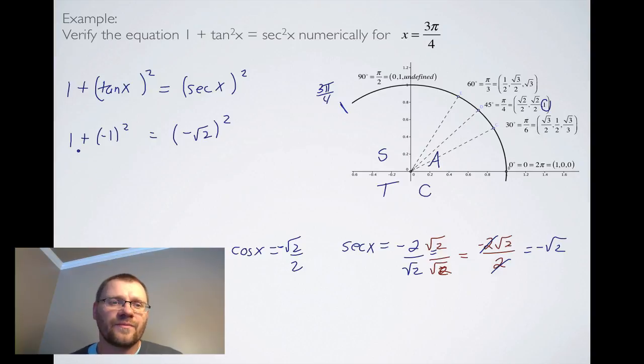Let's check it out. We're verifying this equation, which means we have to see if the left-hand side equals the right-hand side. 1 plus 1 squared, which is just 2, and this is negative root 2 squared, which is also equal to 2. We have verified that this identity works for x equals 3 pi over 4.